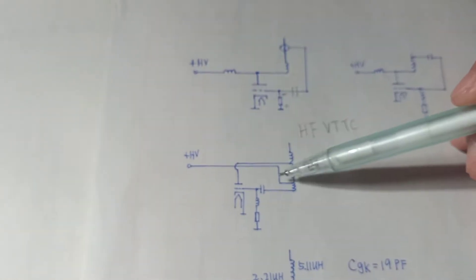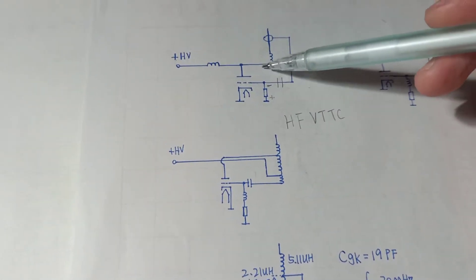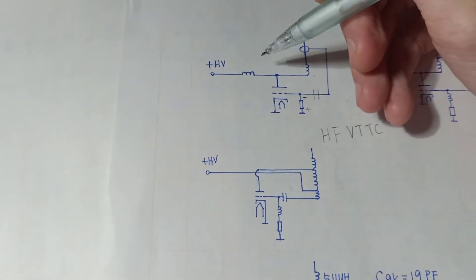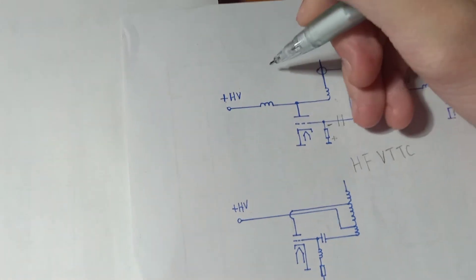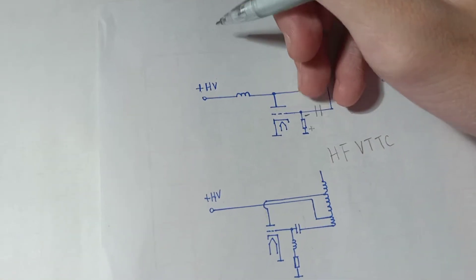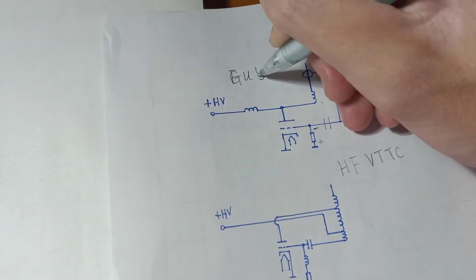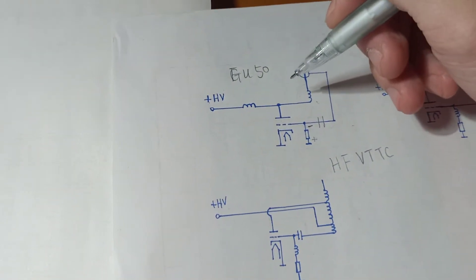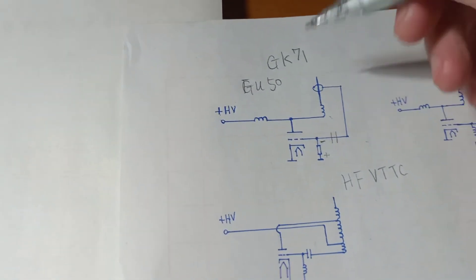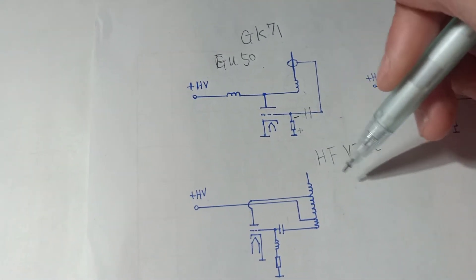but the output will be limited because some of the driving power is lost. And this schematic here, you will also find it on the web. You will find these two schematics. Usually this schematic, the tube here may be a pentode like GU50 or a tetrode like GK71. Actually, these two tubes are very popular for HF-SSTCs.